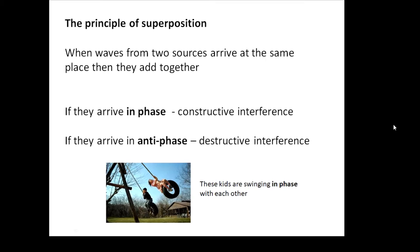We can explain this with the principle of superposition: when waves from two sources arrive at the same place, they add together. If they arrive in phase, we get constructive interference. If they arrive in antiphase, we get destructive interference. In phase means they go up and down together — like two kids on swings swinging together, they are in phase with each other.